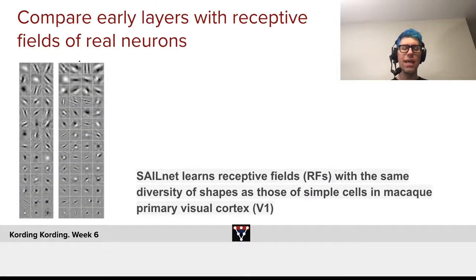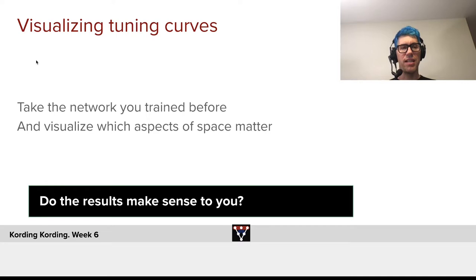Now, we can compare these results from the visualization of the early layers with real neurons in early areas, like primary visual cortex. And there we indeed find that we have very similar neurons in the real brain as we find at the early layers of convnets.